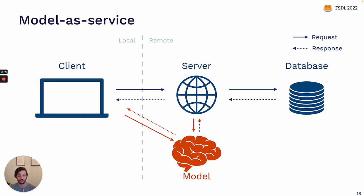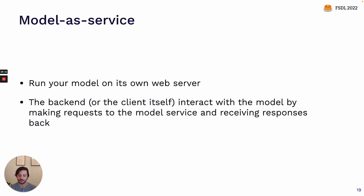The next pattern is rather than running the model offline and putting predictions in a database, instead let's run the model online as its own service. The service will interact with the backend or client by making requests — sending 'what is the prediction for this particular input?' and receiving responses back — 'the prediction for this input is this particular value.'